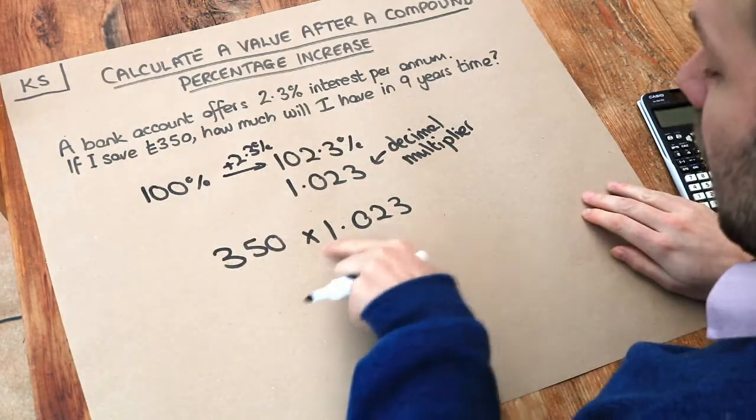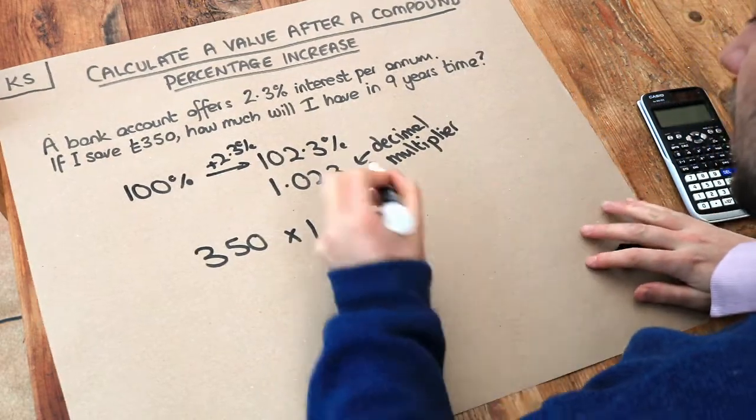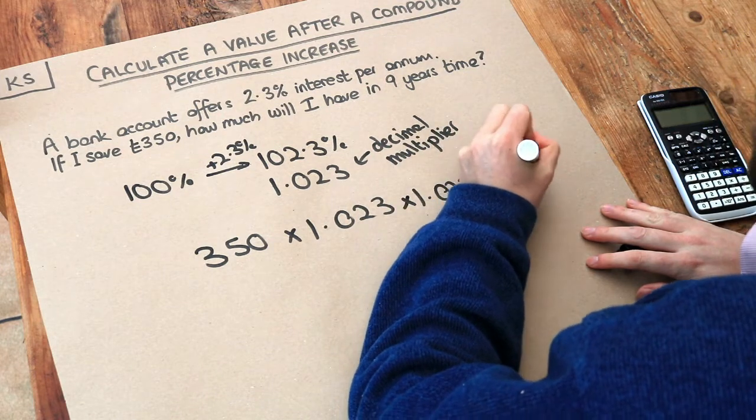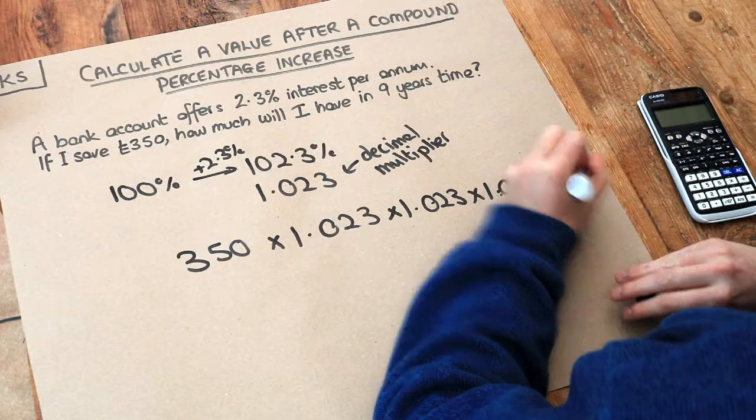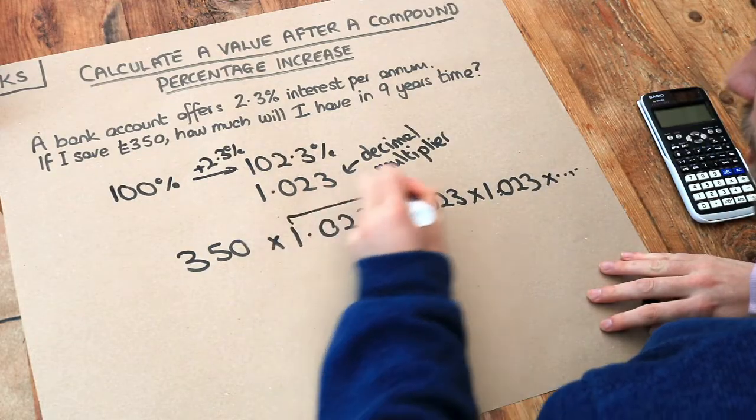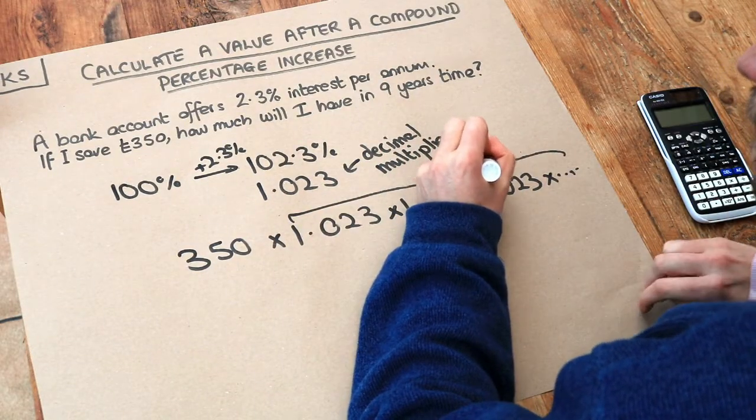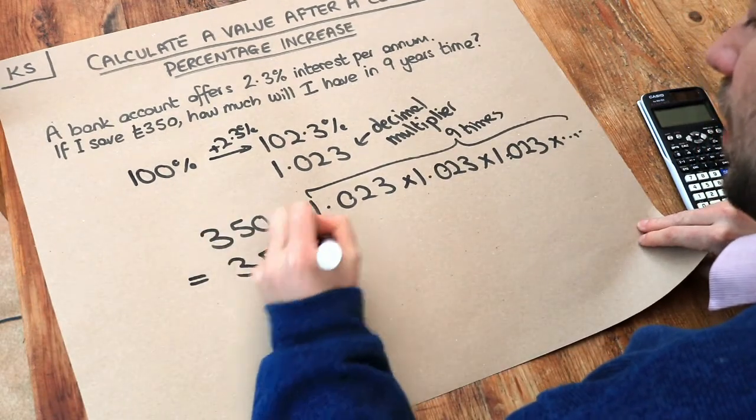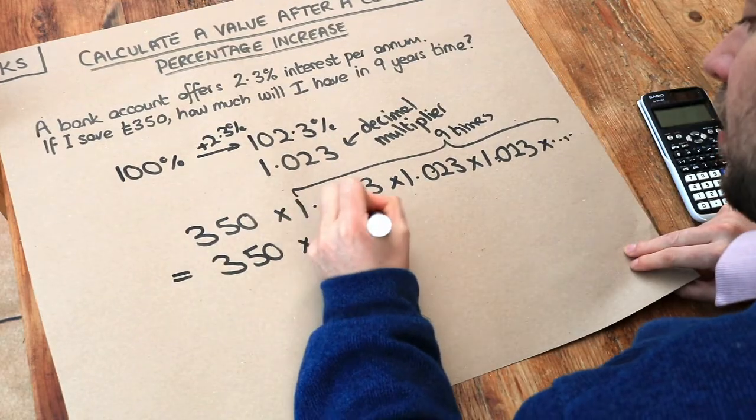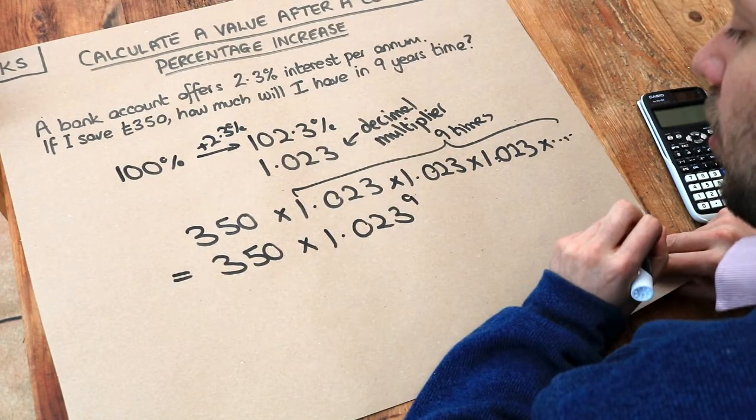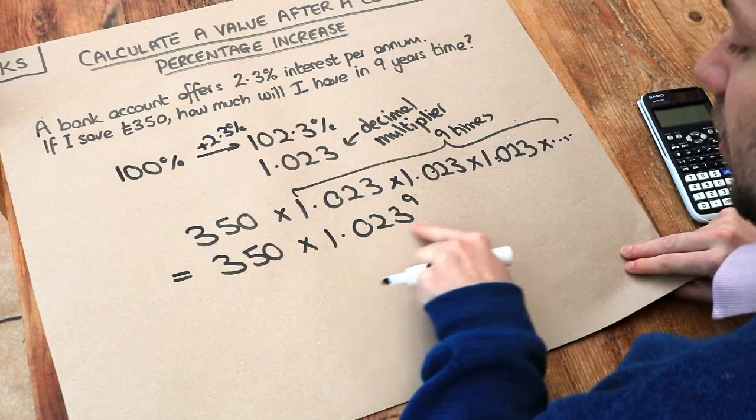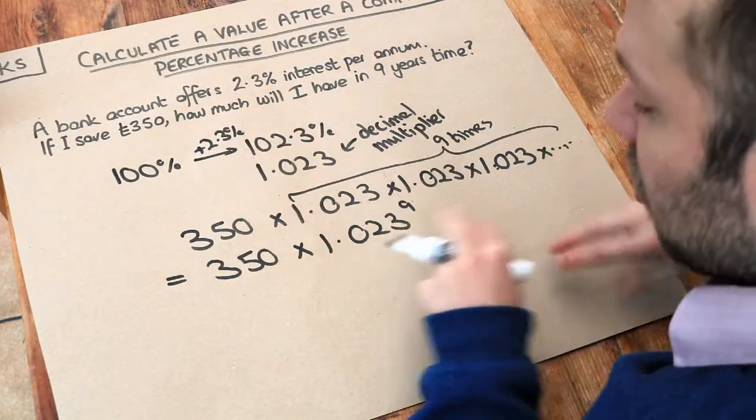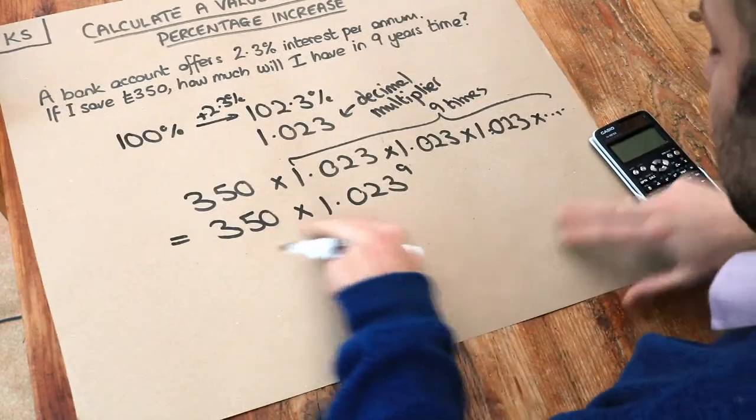But we want to increase it by 2.3% nine times. So we could times it by 1.023 again and 1.023 again and we would have to do this nine times. But there's a convenient way of writing that, isn't there? We would just write 350 multiplied by 1.023 to the power of nine because we're multiplying by 1.023 nine times. And we wouldn't need to do any of this working here to solve the question. We could just write that immediately as our working.